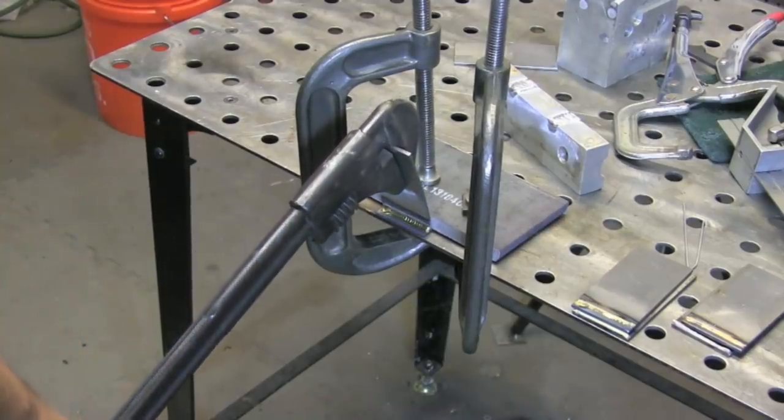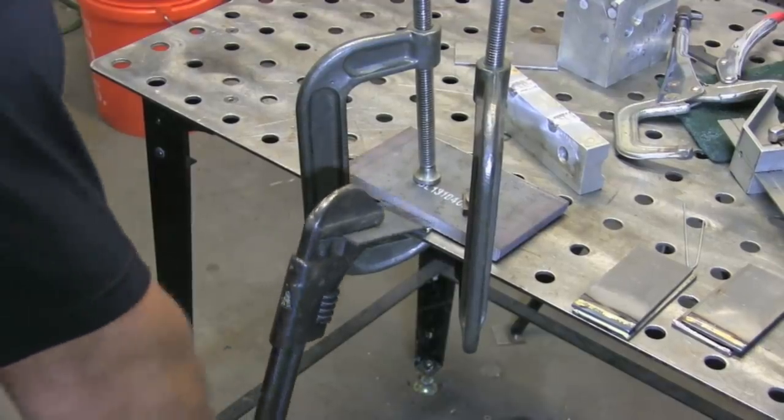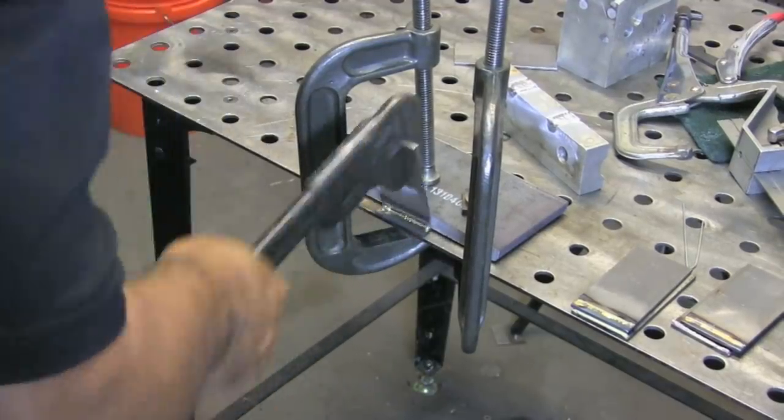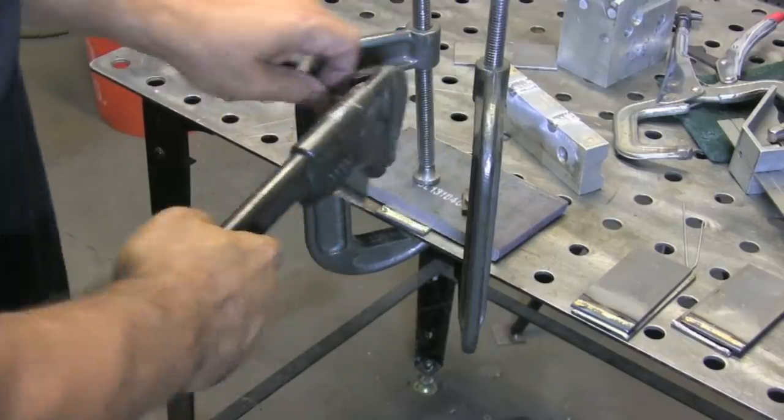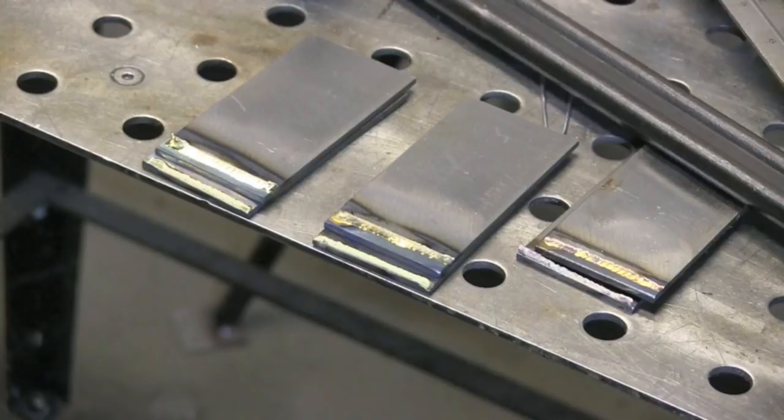And this is much more difficult to break here. It's still going to break, but it's bending the base metal. Not deforming it, but it's taking a lot more effort to snap it. Again, still not impressive, though, as far as just being able to hold up compared to a weld.